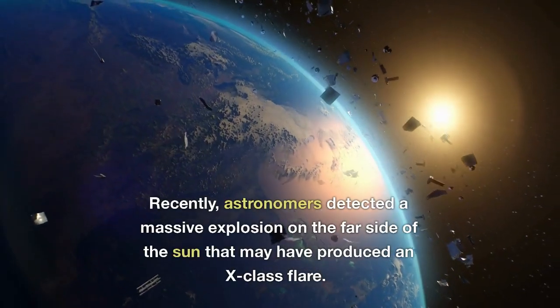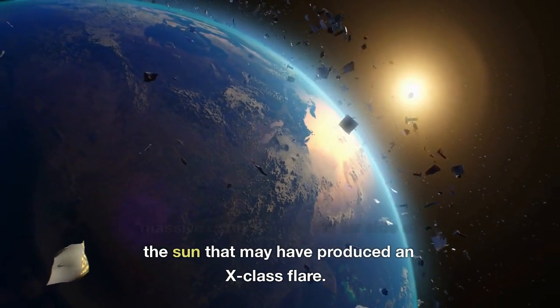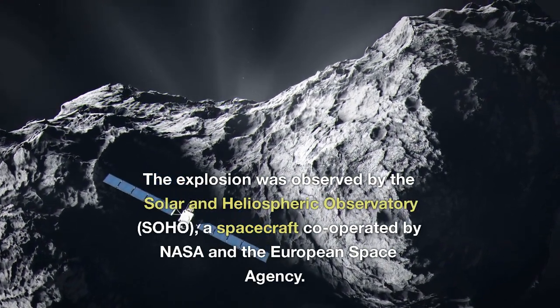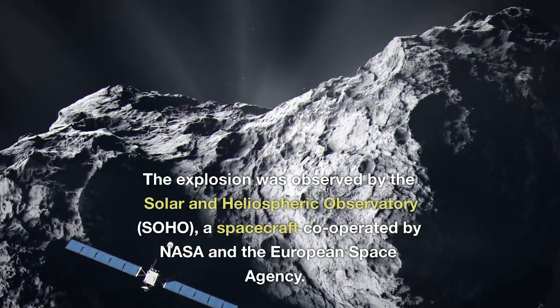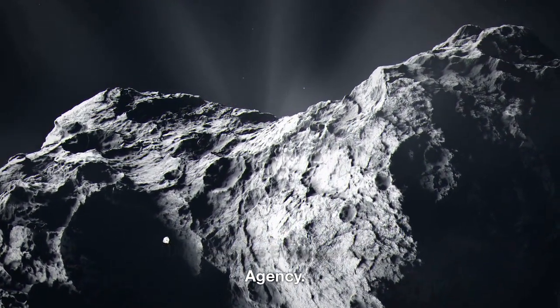Recently, astronomers detected a massive explosion on the far side of the Sun that may have produced an X-Class flare. The explosion was observed by the Solar and Heliospheric Observatory, SOHO, a spacecraft cooperated by NASA and the European Space Agency.